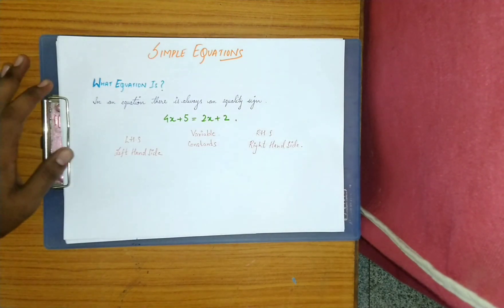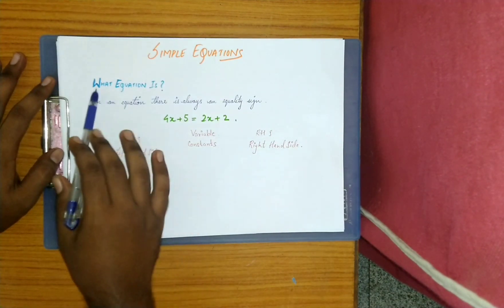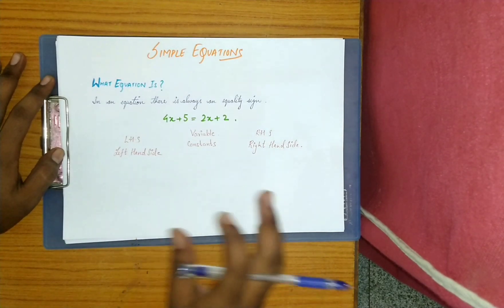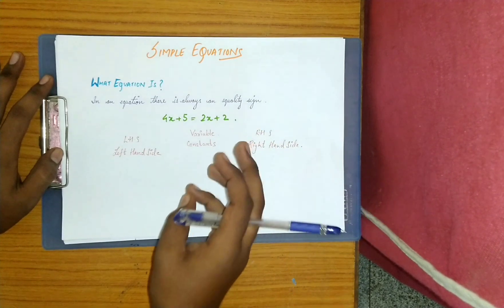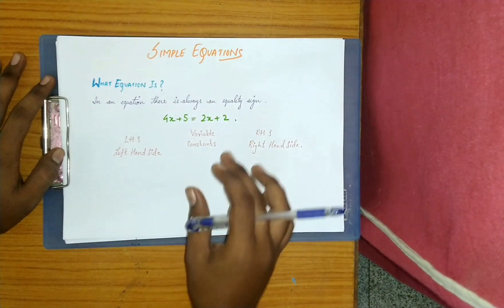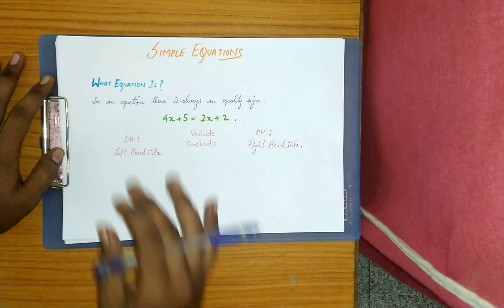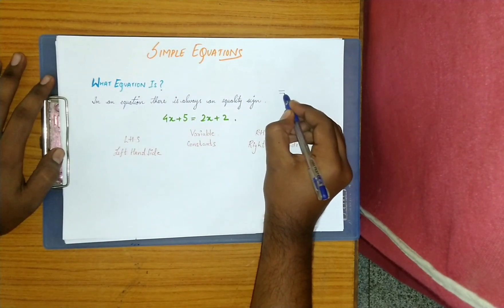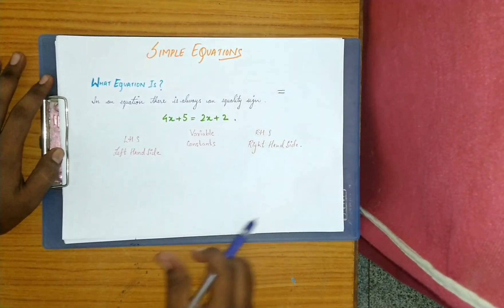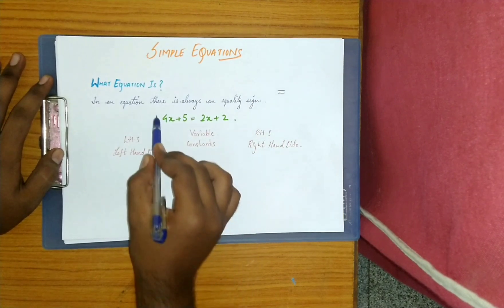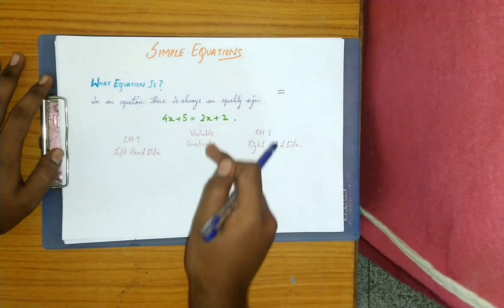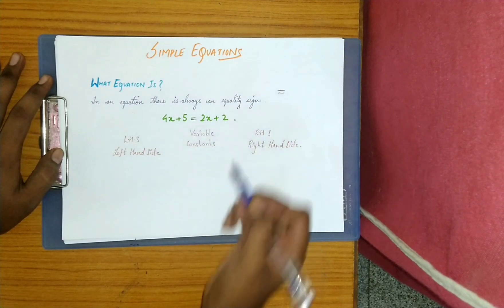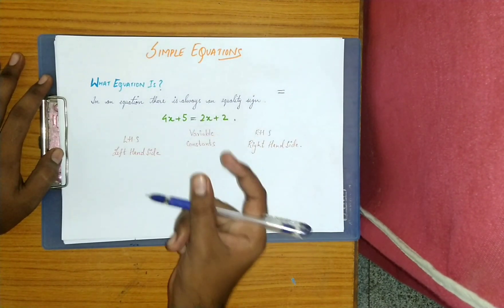So what is an equation? An equation is a combination of variables, constants, and an equality sign. The most important thing in an equation is always an equality sign — that is the equal to sign. For example, looking at this equation, you can tell it is an equation because the equality sign is there. That is the first condition: the equality sign must be present.